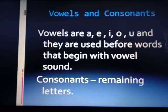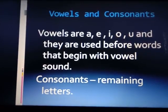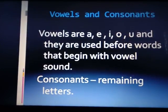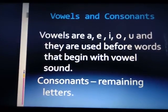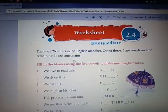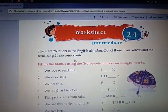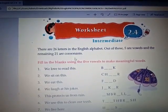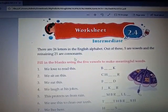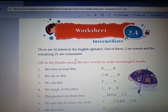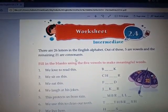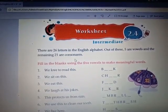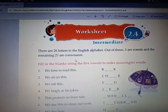Vowels are A, E, I, O, U, and they are used before words that begin with a vowel sound. The remaining letters are consonants. In the English alphabet there are 26 letters — five are vowels and the remaining 21 are consonants.